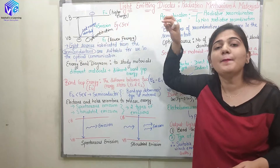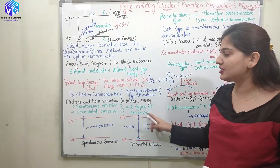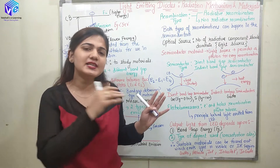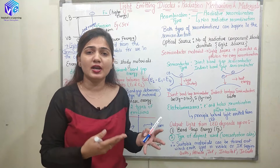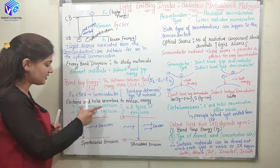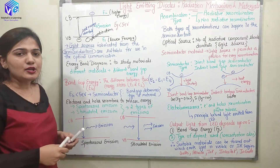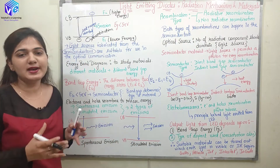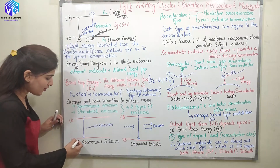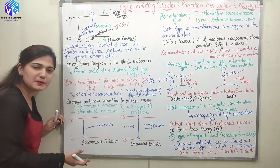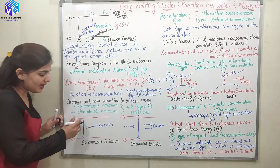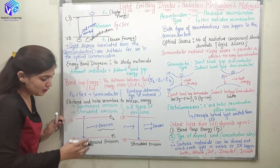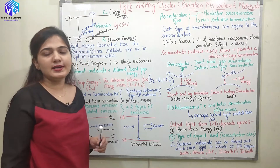Electrons and holes recombine to release energy in the form of photons, and this is termed an emission. There are two types of emission: spontaneous emission and stimulated emission. Spontaneous emission occurs at random times — due to random movements, the electron randomly moves from the valence band to the conduction band and randomly comes back, emitting a photon when transitioning from the higher energy state to the lower energy state.